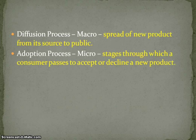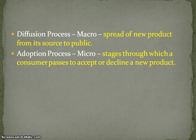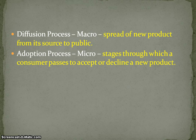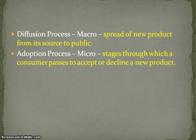Let's talk about diffusion first — the basic understanding of the diffusion and adoption process. The diffusion process is the macro level process because it talks about new products manufactured in a company and how they reach the public. The adoption process, on the other hand, is a micro level process. That means the product is already in the shop and now the customer is going to get it or he may not. The transfer of goods from industry to the retail shop and into people's awareness is called the diffusion process.